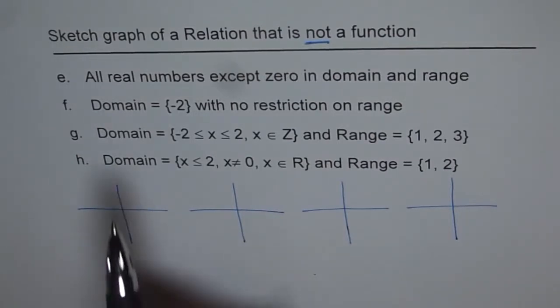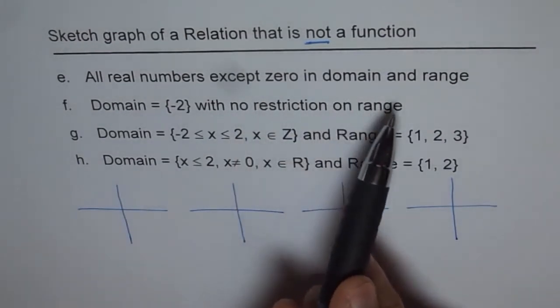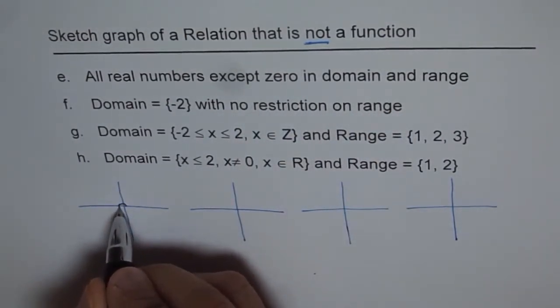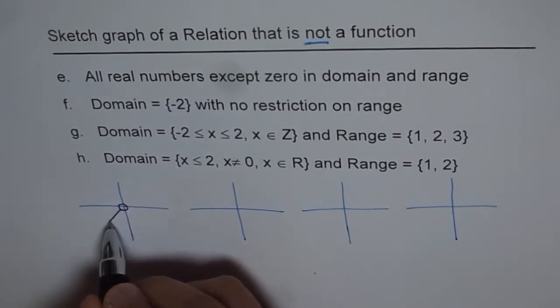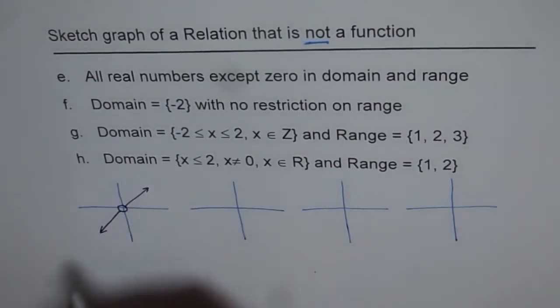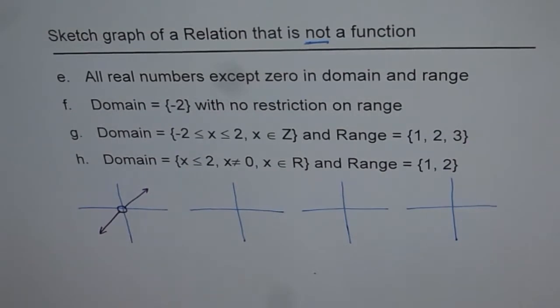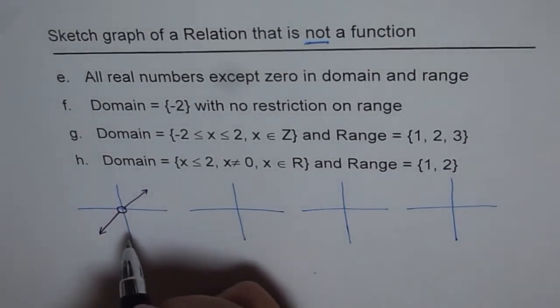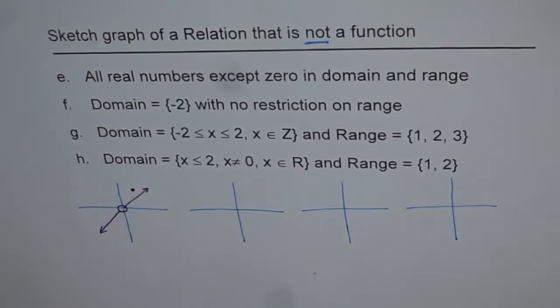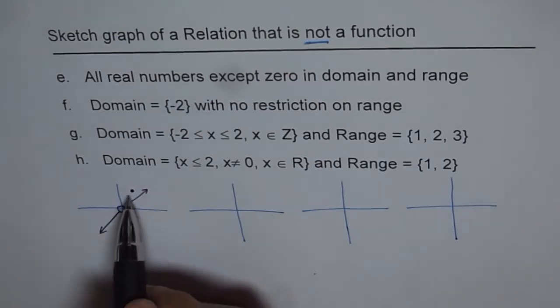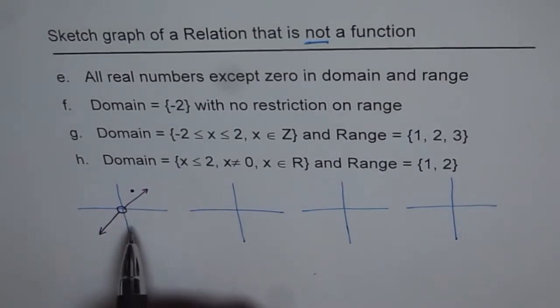Now E is all real numbers except 0 in domain and range. That means we have a hole here. And then we can have a line like this and a line like this. That ensures that domain and range has all real numbers. Just to make sure it is not a function, we can have additional points somewhere in the system. So it fails vertical line test and therefore is not a function, just a relation where domain and range is all real numbers except 0.